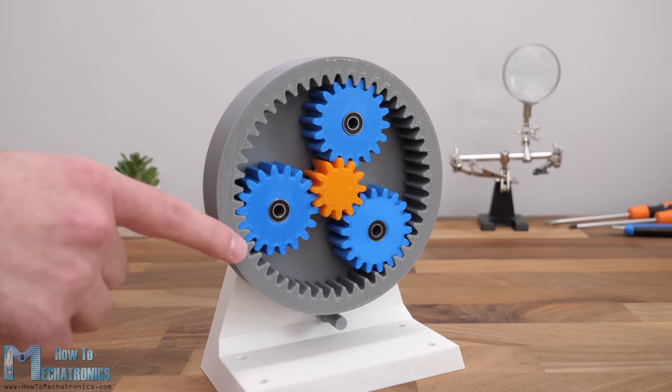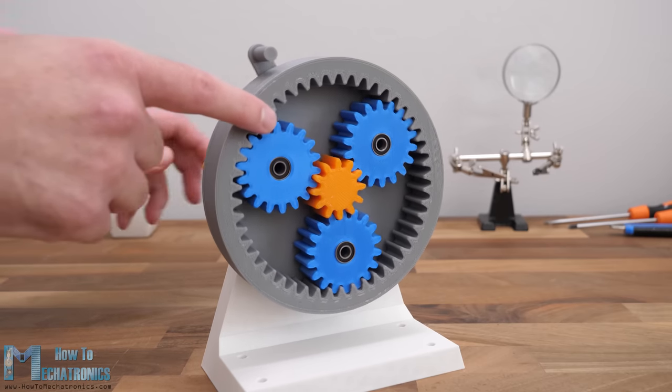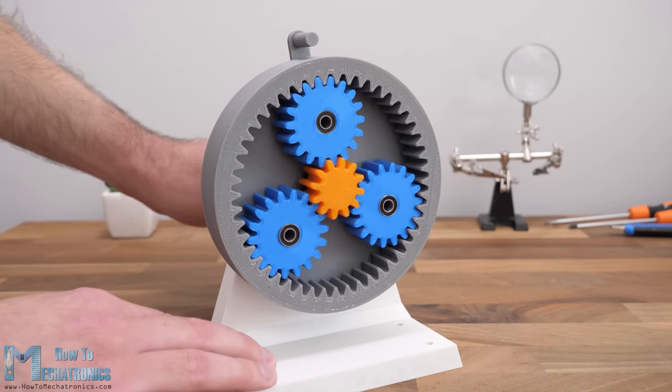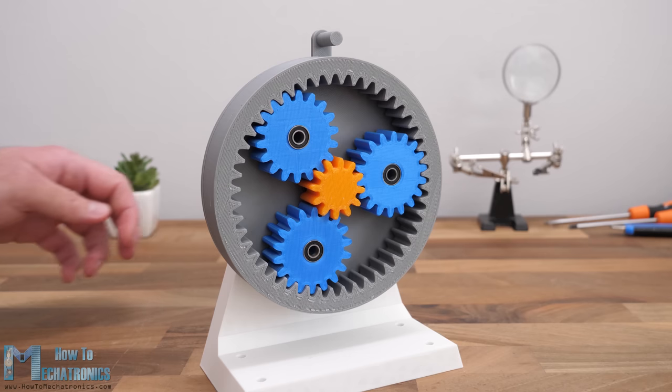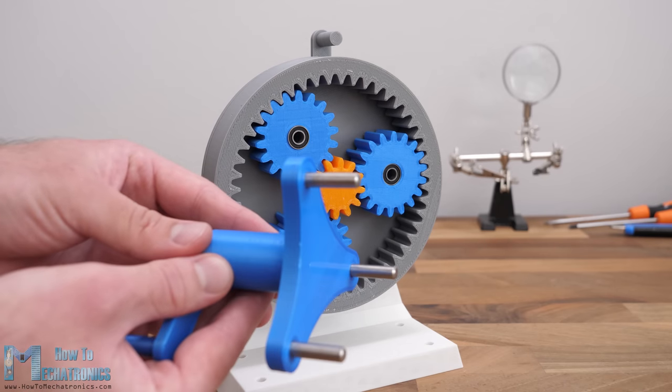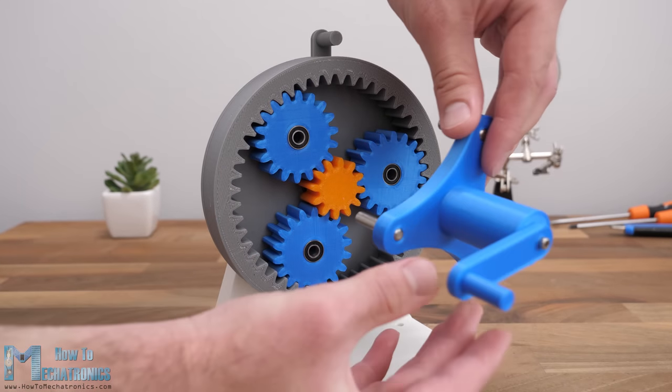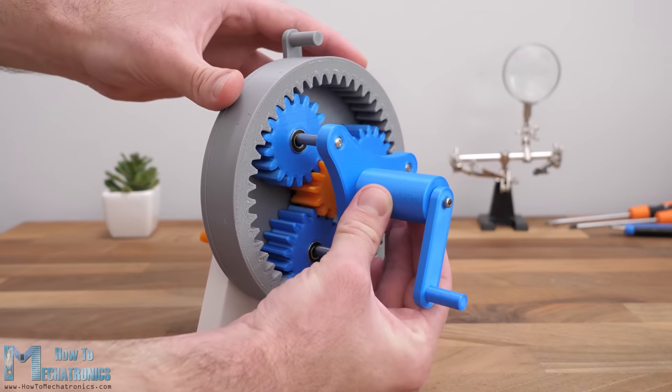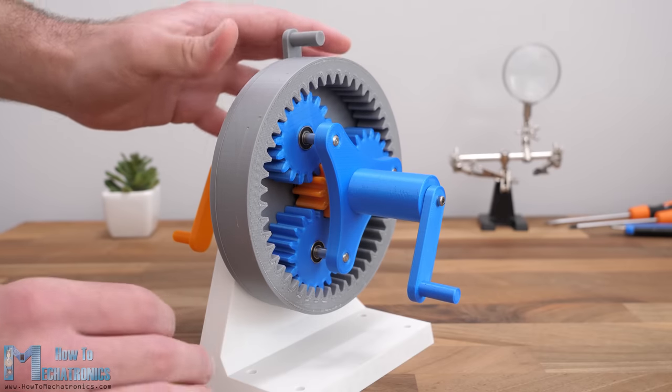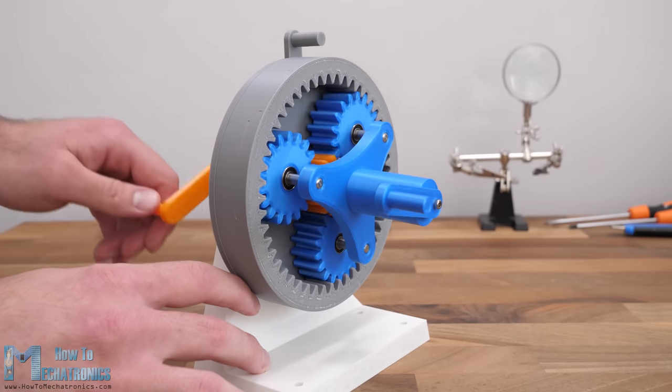The internal toothed gear is called ring gear and it determines the orbit of the planet gears. The fourth component is called carrier and in the most common scenario that's the output of the gearbox. It connects the planet gears together and transfers their orbiting motion into a single central axis output.